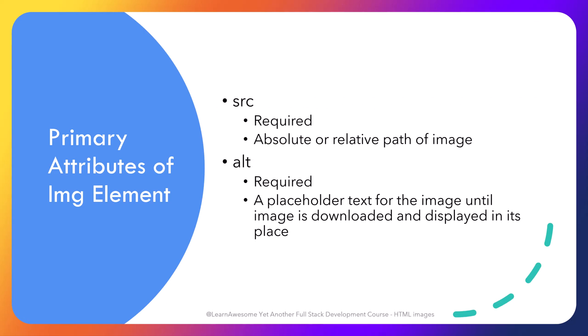The source attribute contains the absolute or relative path for the image, and it's not necessary for the image to be located on the same web server as the HTML document. The alt attribute acts as placeholder text for the image until the browser is able to download the image from source and replace the placeholder with the actual image. All kinds of things can go wrong in that process, and that is why alt is a required attribute.